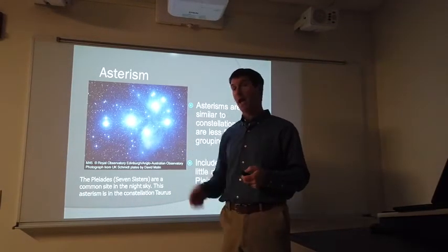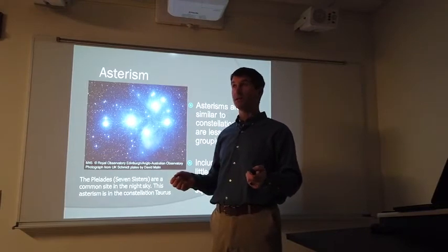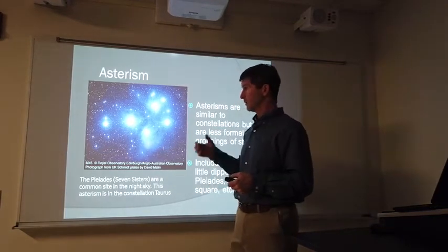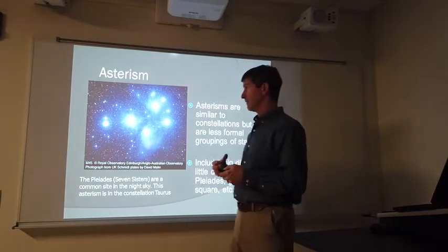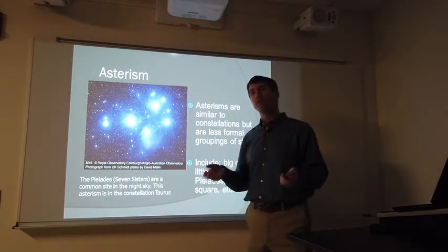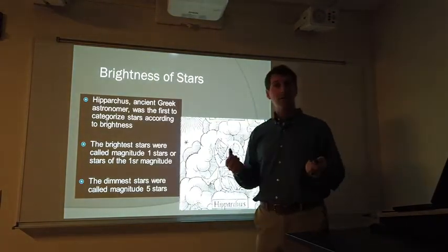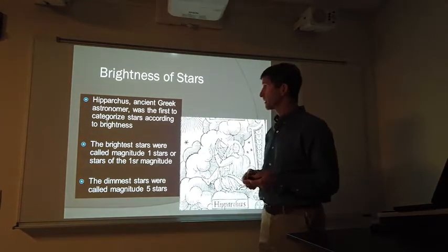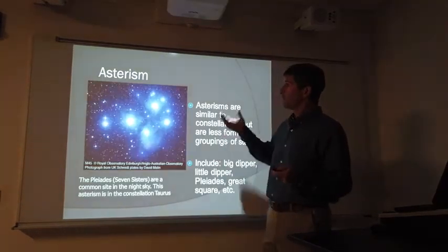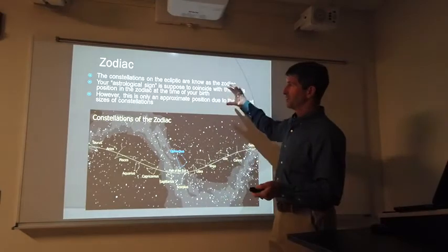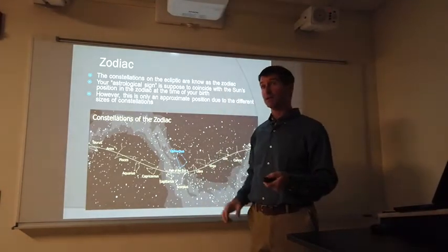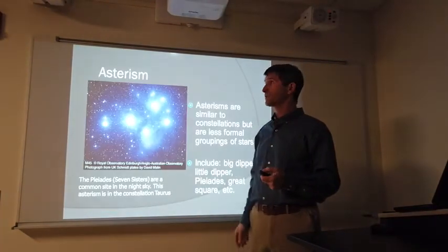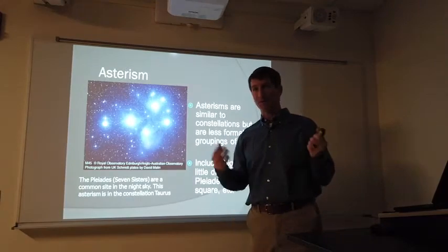The Little Dipper is an asterism within the constellation Ursa Minor. We have the Summer Triangle, we have the Great Square. These are all patterns of stars within constellations. So, constellations are official patterns of stars. Zodiac are constellations on the ecliptic. Asterisms are fun patterns of stars we just like to recognize.